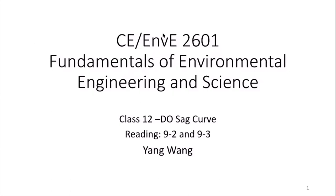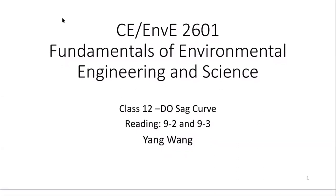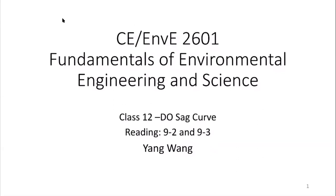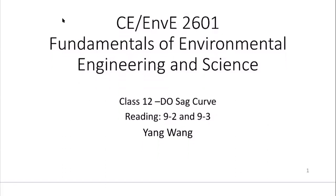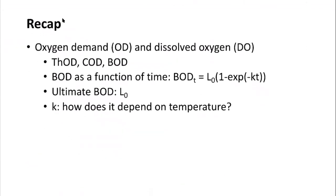This class, we're going to finish up the BOD measurement and also talk about the DO-SAG curve. The reading assignment is sections 9-2 and 9-3 of the textbook. Last class we discussed oxygen demand and dissolved oxygen, and further discussed the differences among the theoretical oxygen demand, the chemical oxygen demand, and biochemical oxygen demand.